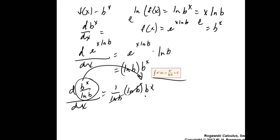That's exactly what you see at the top of the page. So the derivative of b^x is (ln b)(b^x). Therefore, the integral of b^x is b^x divided by ln b, plus c. If b is e, then integral of e^x is e^x over ln e = e^x over 1 = e^x. That works out perfectly.